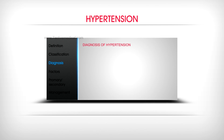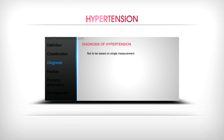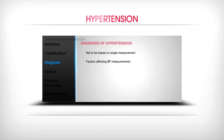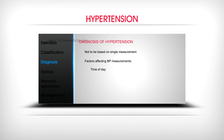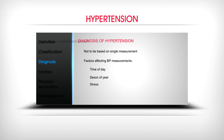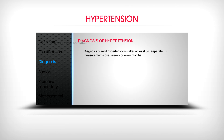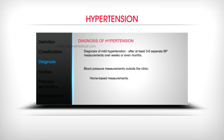Diagnosis of hypertension should not be based on a single measurement. Factors affecting blood pressure measurements include time of day, season of year, and stress. Diagnosis of mild hypertension requires at least 3–6 separate BP measurements over weeks or months. Out-of-clinic measurements include home-based measurements and ambulatory blood pressure monitoring (ABPM).